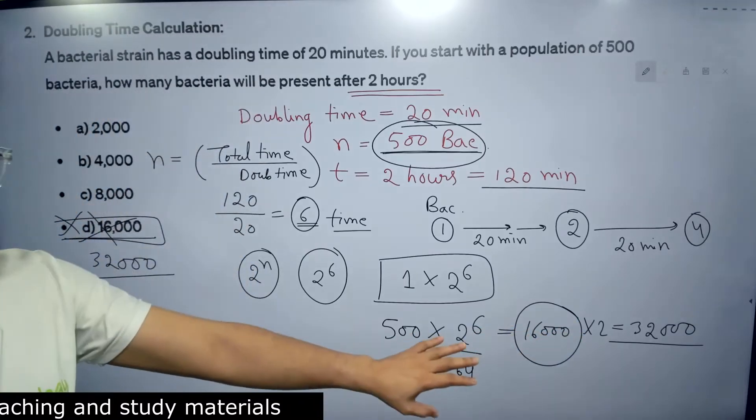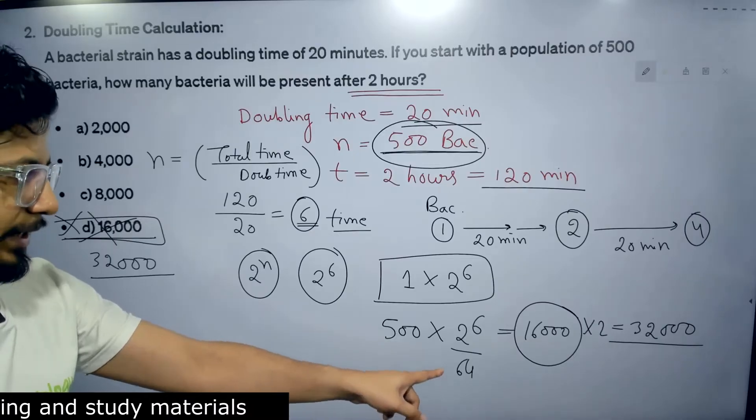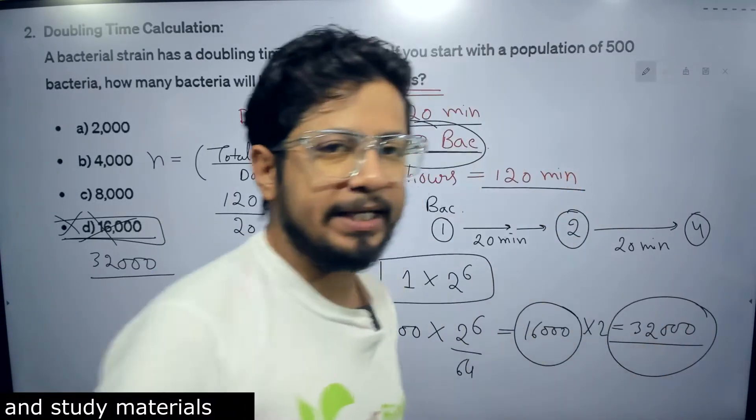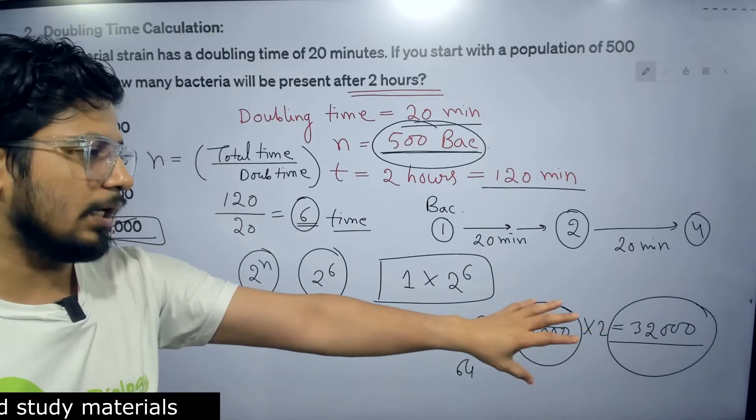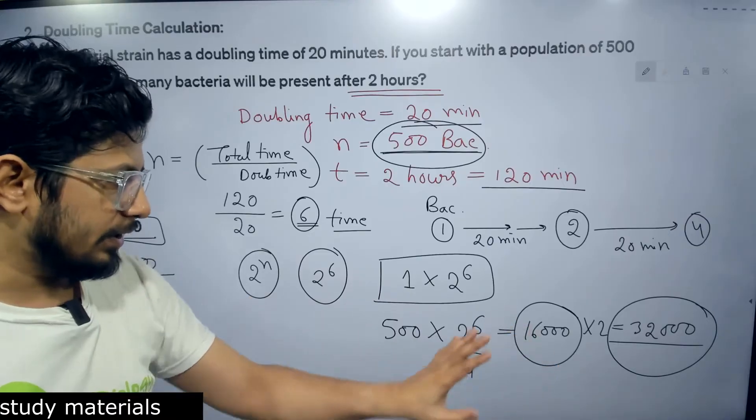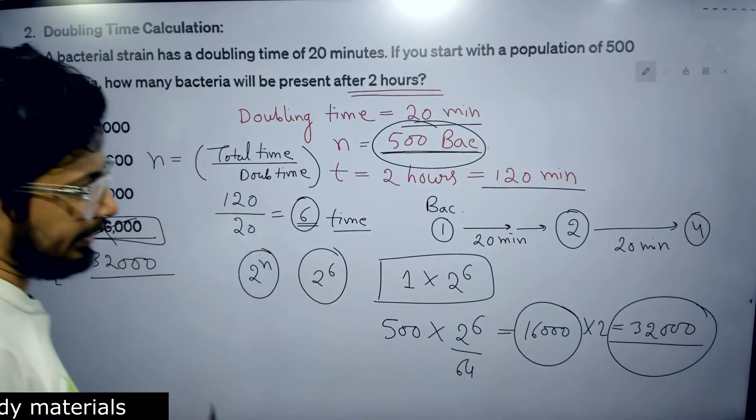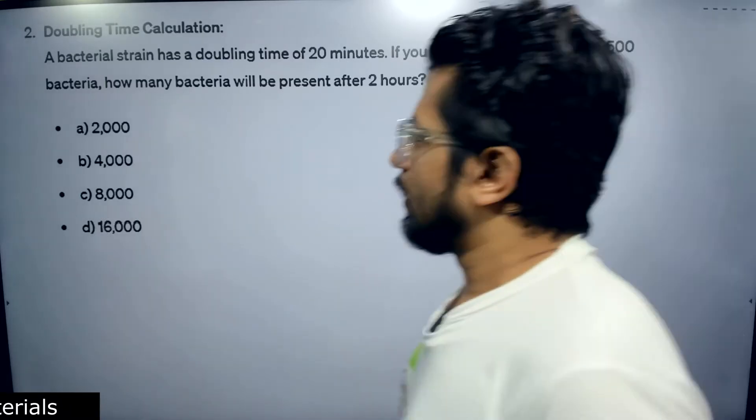None of the options were actually correct, 32,000 should be the correct answer. The process is the same. I miscalculated here. 2 to the power 6 is 64, into 500, so that gives us 32,000. The net number of bacteria that will be produced here is 32,000. The answer may not be in the option, but let us put it there. 32,000 is the correct answer. That is how you solve these questions.